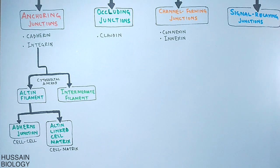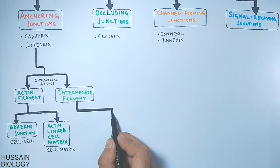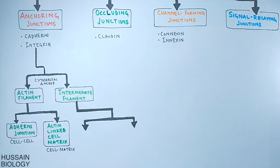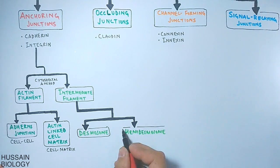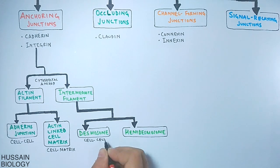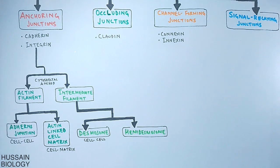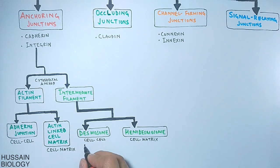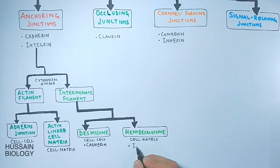The anchoring junctions containing intermediate filaments are also categorized into two types: desmosome and hemidesmosome. The desmosome anchoring junction is between two cells, while the hemidesmosome is between a cell and a matrix. Also remember that desmosome has cadherins as the transmembrane linker, while hemidesmosome has integrin as the transmembrane linker protein.